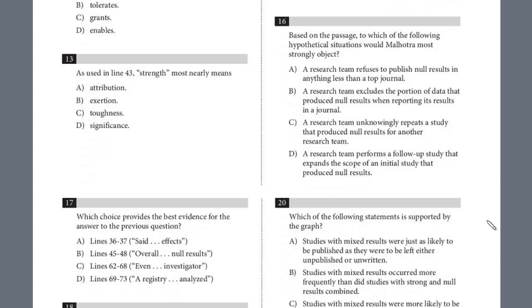And 16, always scan at the next question, looks to be another two-part question. Based on the passage, to which of the following hypothetical situations would Malhotra most strongly object? And so if you watched the last video, the very last question was a two-part question. Again, when you have these, we know that the range is bound from the beginning of A to the end of D. It's between 36 and 73. And what I want you to do is skim through this range. Don't even pay attention to the individual parts that are broken, these segments, just in the range.